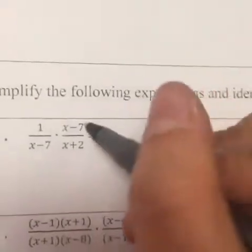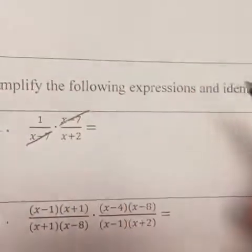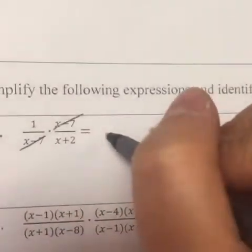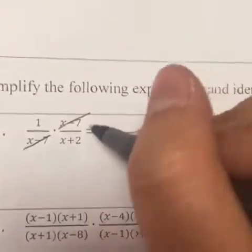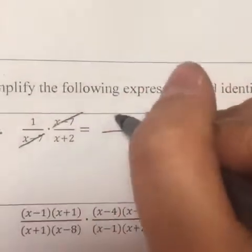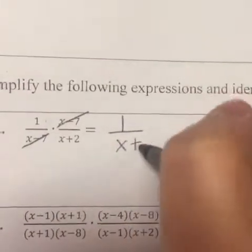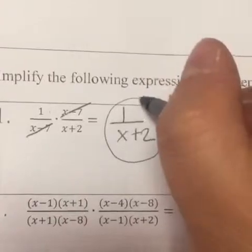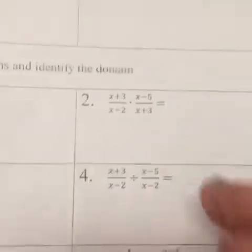Here we have x minus seven on top and x minus seven on the bottom — they're the same, so we cancel them out. They just become one, and whatever is left over is our answer: x plus two. So the answer is one over x plus two.